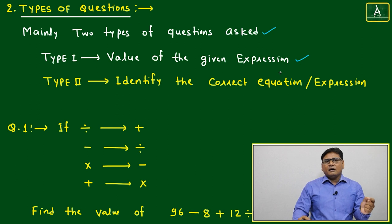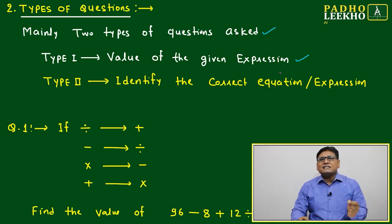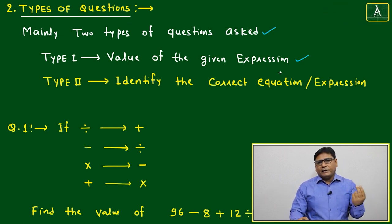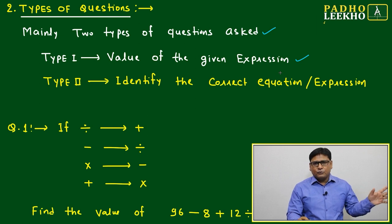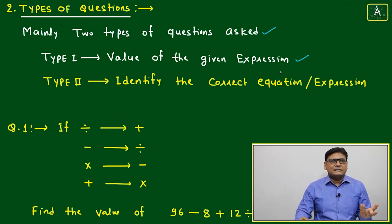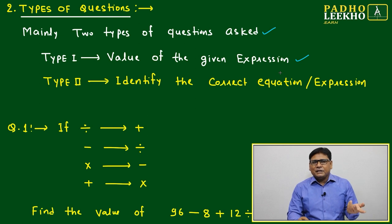Any particular expression is given based on certain instructions in the questions, and you have to find the value. That is Type I, a very famous category or typical question.